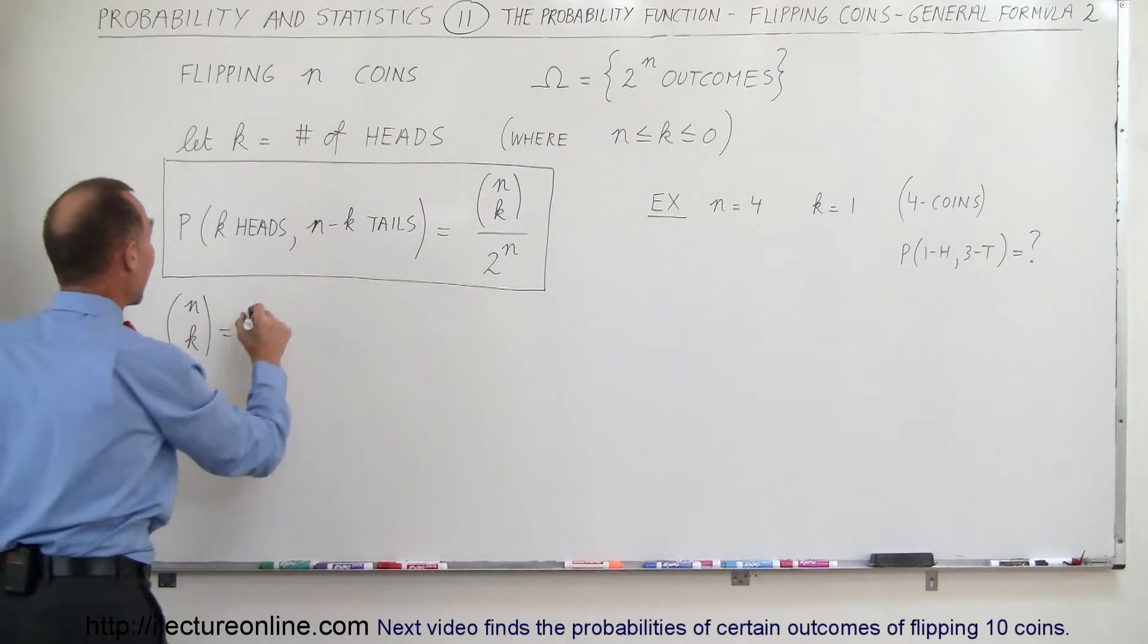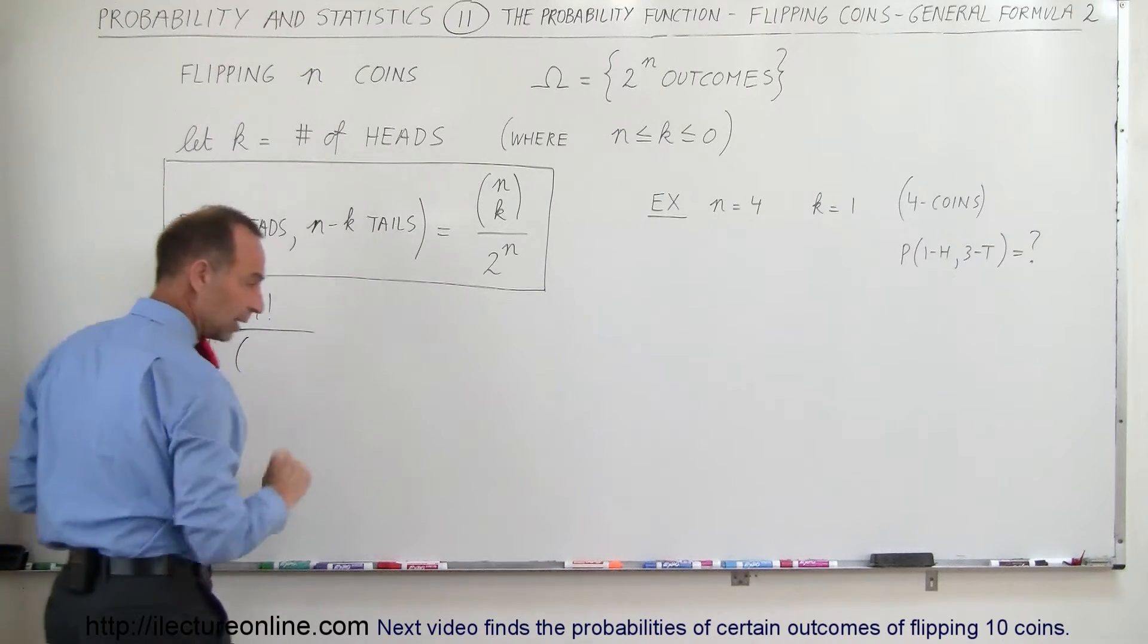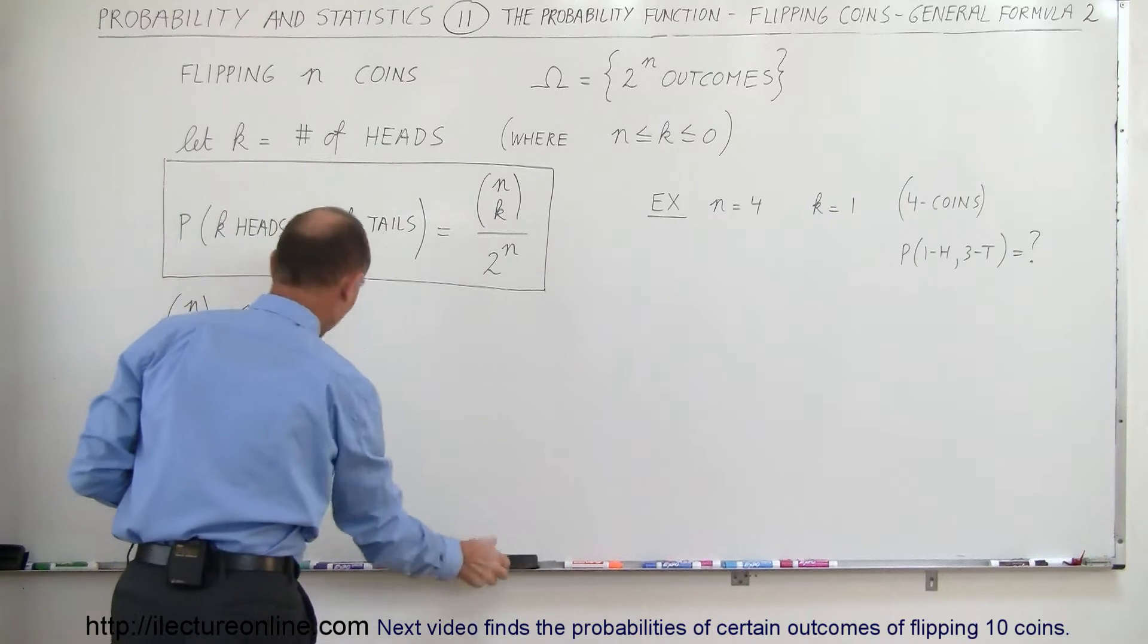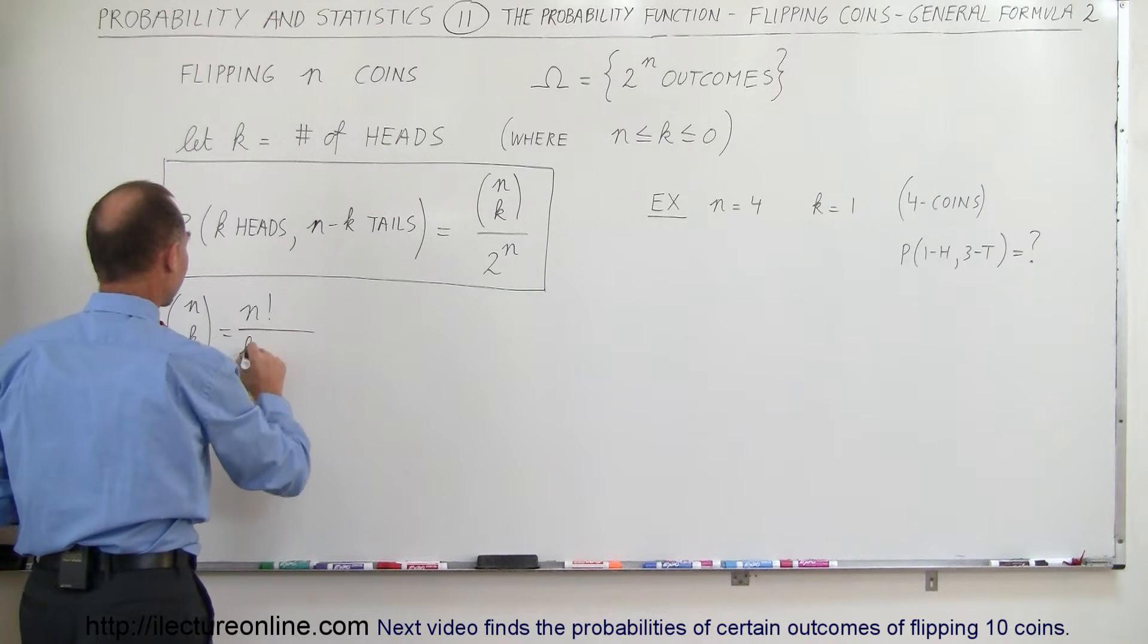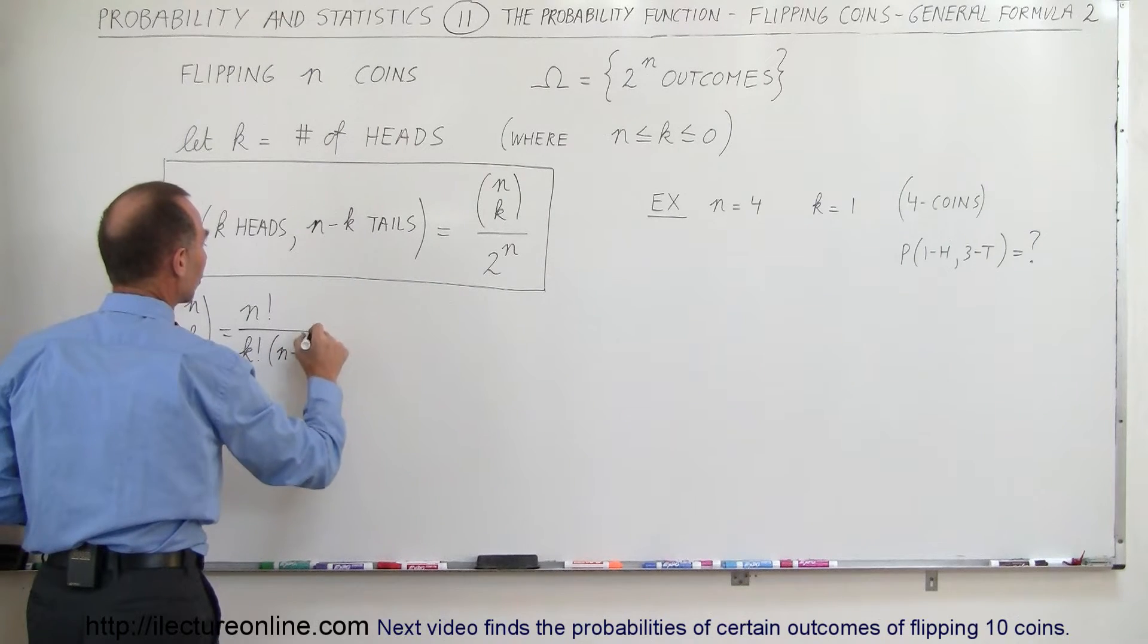This is defined as n factorial divided by k factorial times n minus k factorial.